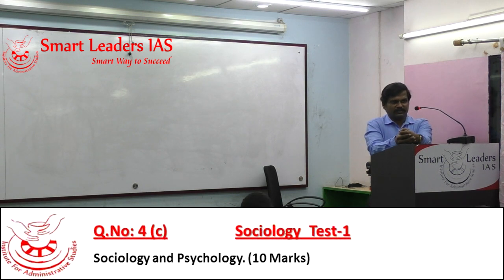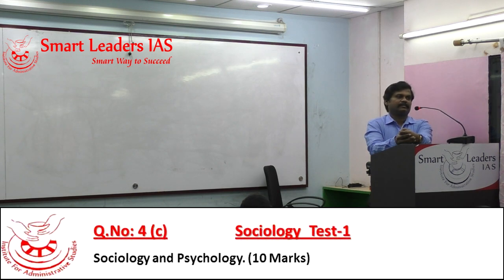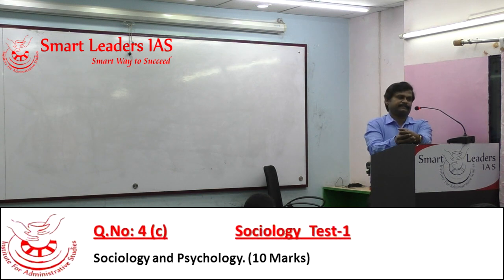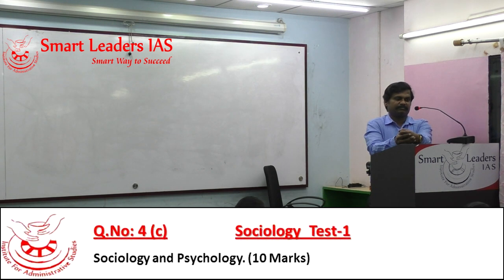Sociologists give importance to social processes, social institutions, value systems, and the norms of society, whereas psychologists give importance to cognition, interpretation, problem solving, personality, and attitude formation.